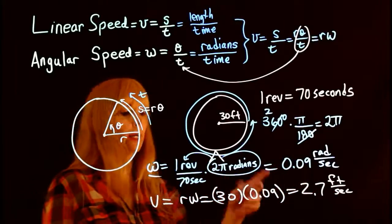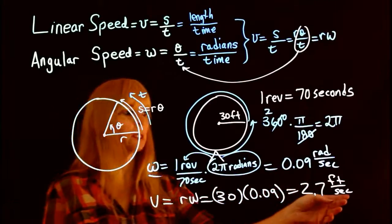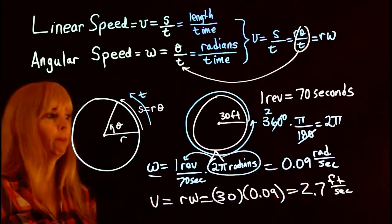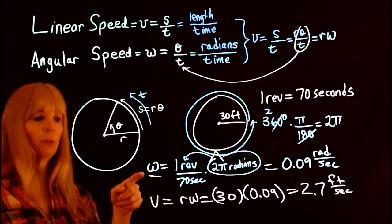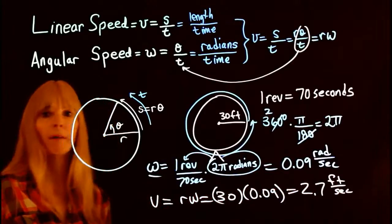In this case, unit-wise, my angular speed is going to be in radians per second. This one, my linear speed, is going to be a measurement in feet per second. Think angle, angular. Linear, this is where we're using our feet.